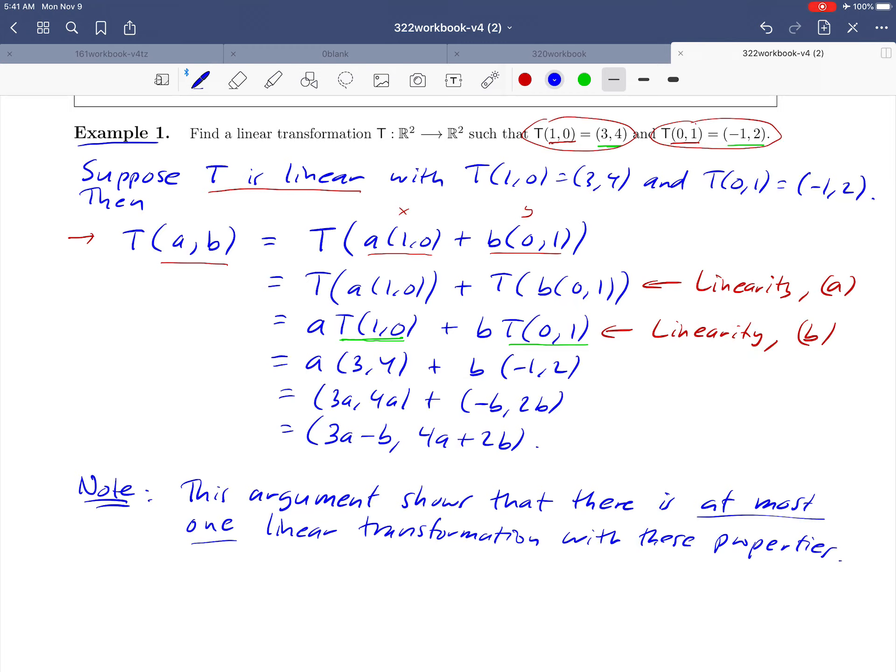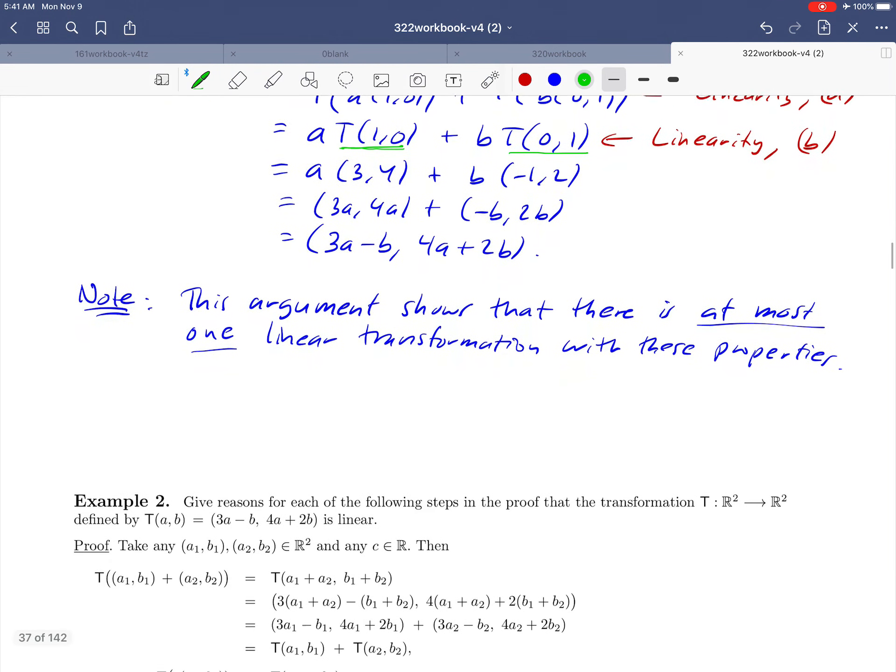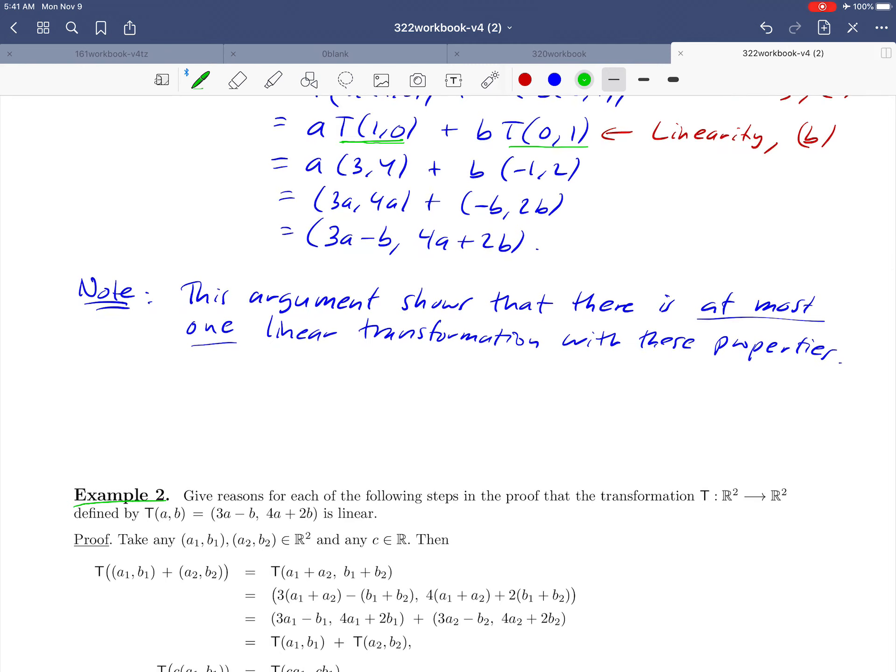How do we know that this function is really linear that we came up with? We assumed that it was linear in our very first line up here. So technically, we should verify that this formula that we came up with is a linear transformation. I'm not going to do that in this video, but if you're interested, example two down below takes the same linear transformation that we came up with and actually steps you through a proof that it's linear. So feel free to take a look at that if you want to. Thank you.